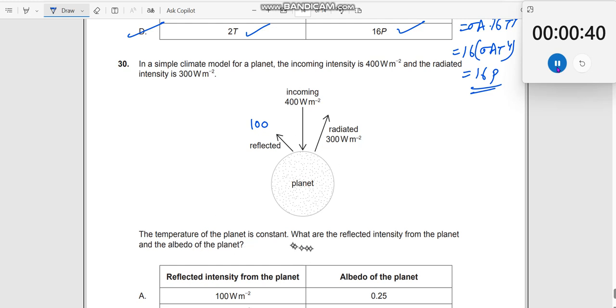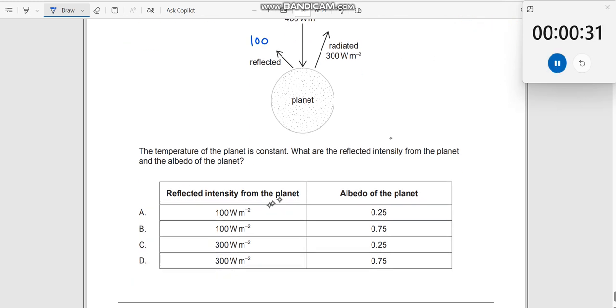Temperature of the planet is constant. What are the reflected intensity from the planet and the albedo of the planet? Reflected intensity we already got, which is 100. Let us look at the option 100. So therefore, these two are incorrect. These two are correct.